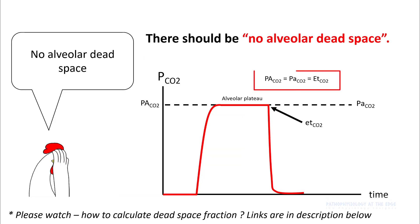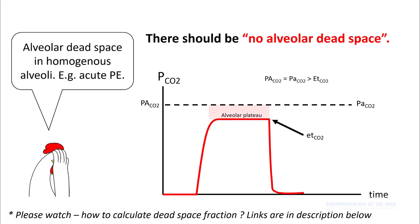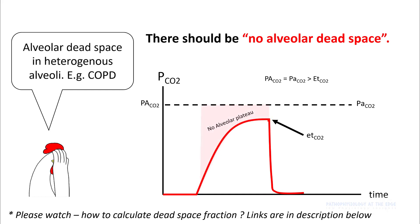If you have no alveolar dead space, your PaCO2 will be equal to your end-tidal. If you have alveolar dead space with homogeneous emptying of your alveoli, your end-tidal will be slightly lower than PaCO2, depending upon the degree of alveolar dead space — please watch my lecture on how to calculate dead space fraction. In patients with COPD who have heterogeneous emptying of the alveoli, you will see a slope in phase 2, and in these cases your end-tidal will not reach PaCO2, so do not use these end-tidal values to approximate PaCO2.